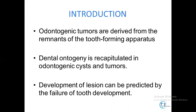Starting with the introduction — when we talk about odontogenic tumors, these are tumors which take their origin from the histogenetic sources of the tooth-forming apparatus, such as the remnants of dental lamina, the Hertwig's epithelial root sheath remnants, the rests of Malassez, reduced enamel epithelium, and the enamel organ. It is nicely said that dental ontogeny — the formation of the tooth — is recapitulated when we talk about odontogenic tumors.